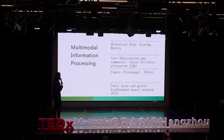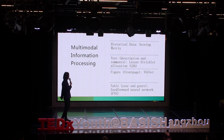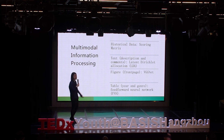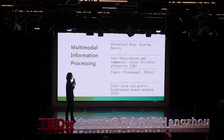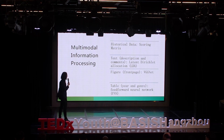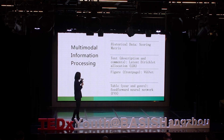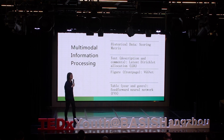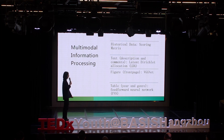Now I'm going to introduce the multi-modal information processing I use in my algorithm. What do we mean by multi-modal here? It means that we use different modalities of data, including historical interaction data — the most basic one — and also text, figures, and tables. I have specific algorithms that deal with each of these different modalities, though I won't go into detail about each one.